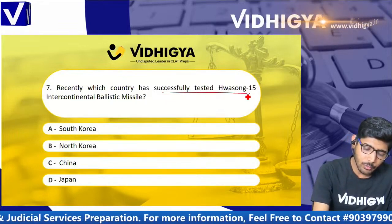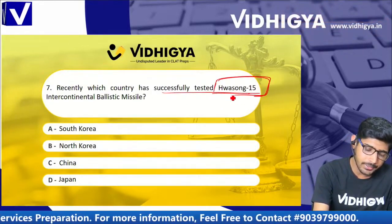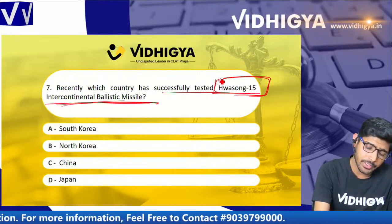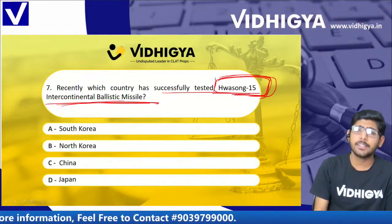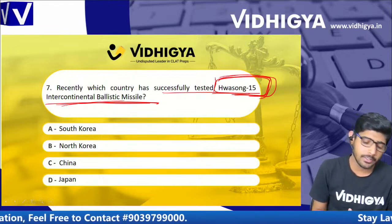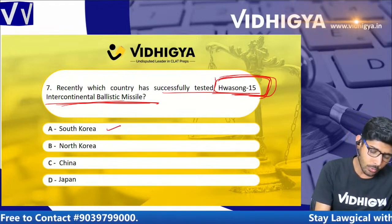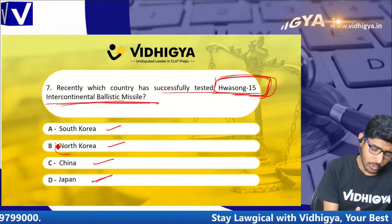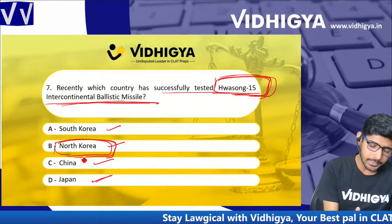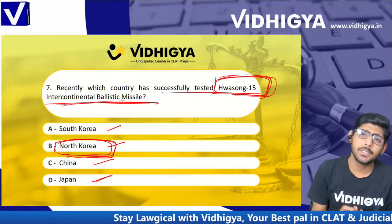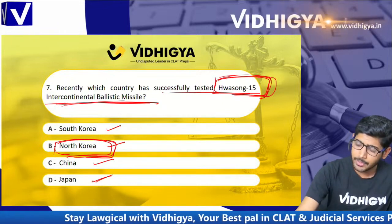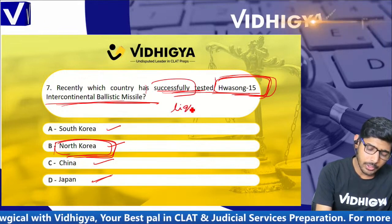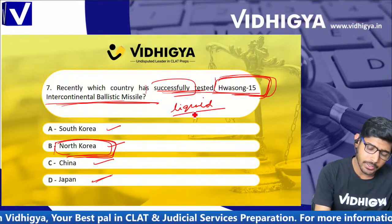Recently, which country has successfully tested the Hwasong-15 Intercontinental Ballistic Missile (ICBM)? Options are: South Korea, North Korea, China, and Japan. The correct answer is North Korea. North Korea recently successfully tested the Hwasong-15 ICBM. Regarding the fuel used, liquid fuel — liquid propellant — was used in it.